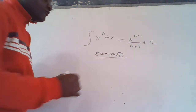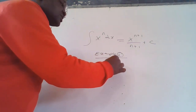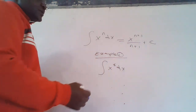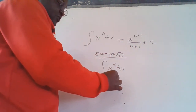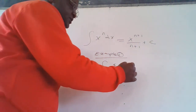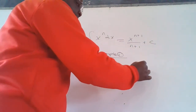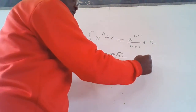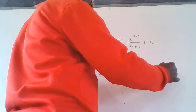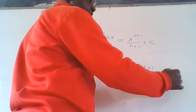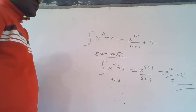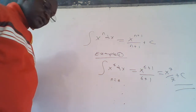Example one: integrate x raised to 6, dx. In this expression, n equals 6. Therefore, when we perform the integration, this equals x raised to 6 plus 1, over 6 plus 1, which equals x raised to 7 over 7, plus the constant of integration.